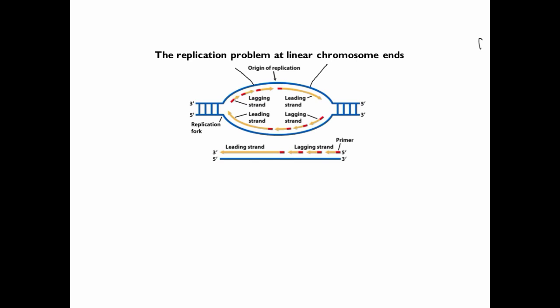And during lagging strand synthesis, short RNA primers are laid down by the enzyme primase that provide a 3' hydroxyl for DNA polymerase to add new nucleotides to. Now, these primers are then removed, and DNA polymerase then fills in these gaps because each fragment has a free 3' hydroxyl to which new nucleotides can be added to.